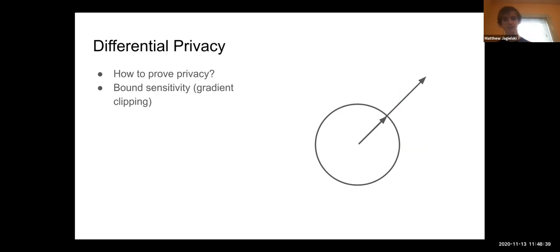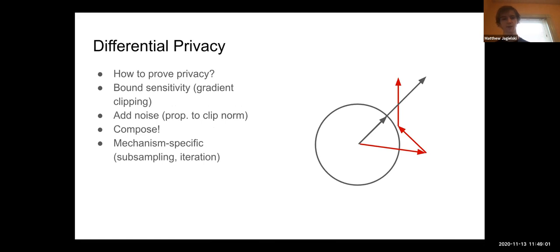What's nice about DPSGD is it gives you this window into how you prove differential privacy. You start with one query to your dataset, bound the sensitivity of that query, add noise to it, and then run composition if you're running many queries. For specific mechanisms, sometimes you get other types of nice privacy things to improve, like amplification by subsampling or amplification by iteration.